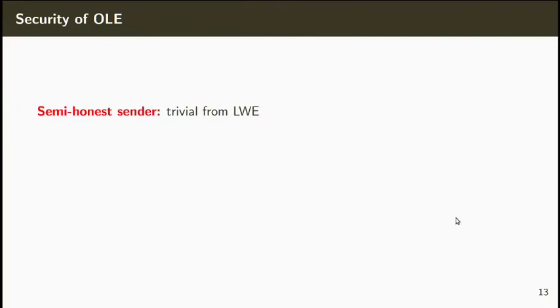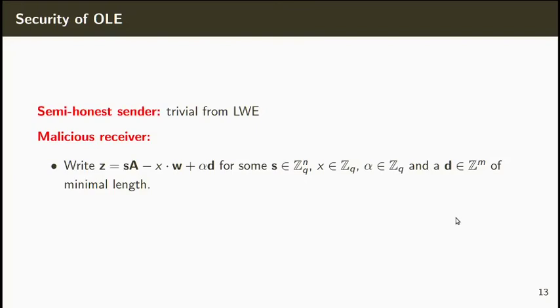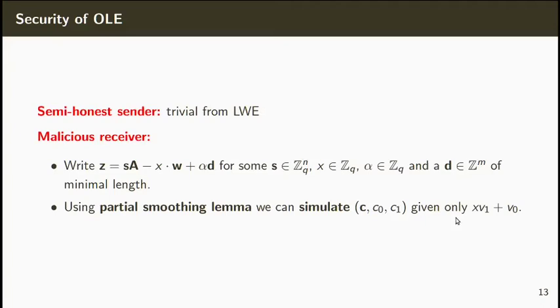Again, security against the semi-honest sender can be trivially established from the LWE assumption. For the malicious receiver case, we're going to write Z as S times A minus XW plus alpha D for D of minimal length. Using the partial smoothing lemma, we can actually simulate the sender's message given only the output of the functionality X times V1 plus V0. So, it remains to show how the reduction can extract X from the receiver's message.